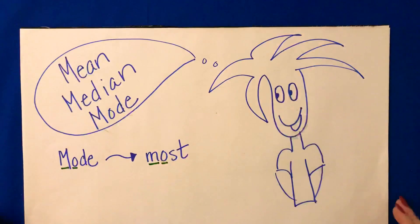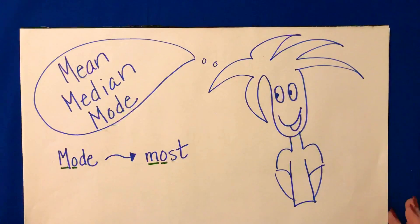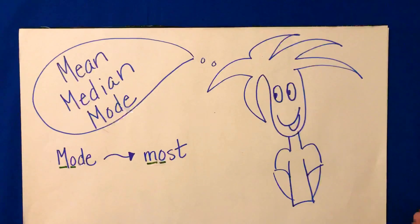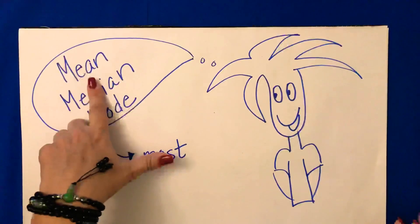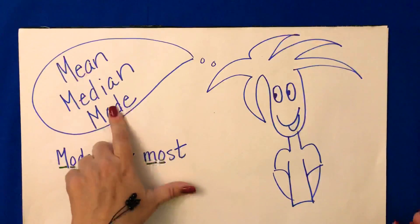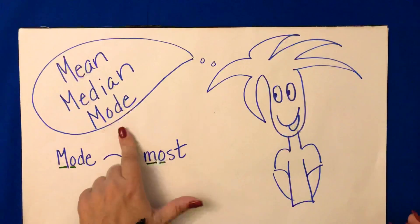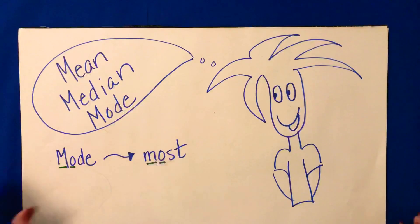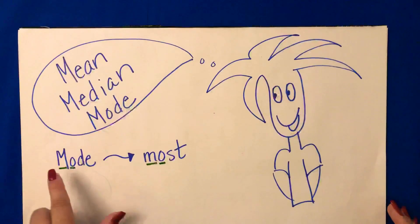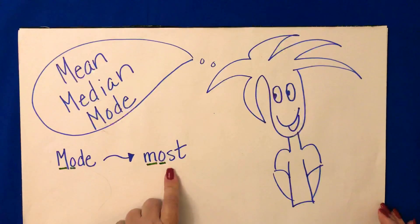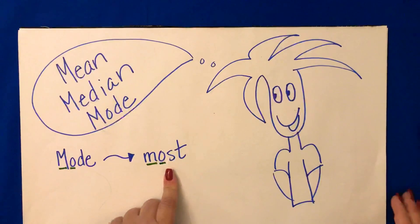Hi everyone! Welcome to Math Wizards 123. In this week's videos, we're going to be discovering how to find the mean, the median, and the mode of a data set. This video, I'm going to start by showing you how to find the mode, which is the number that occurs the most.